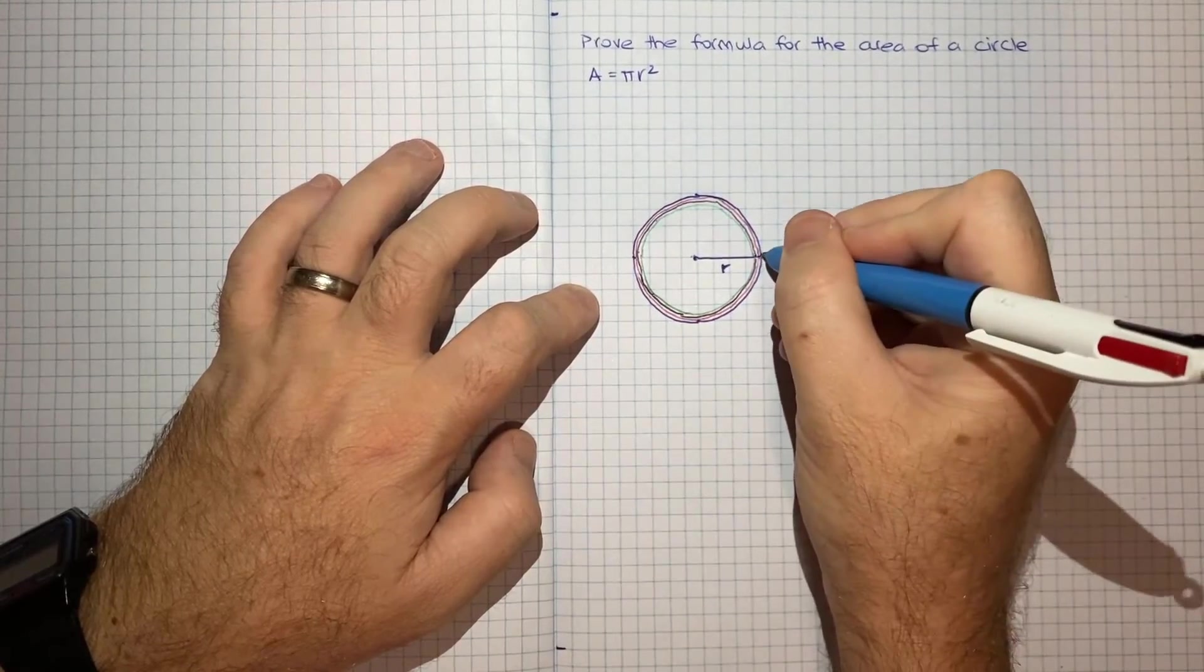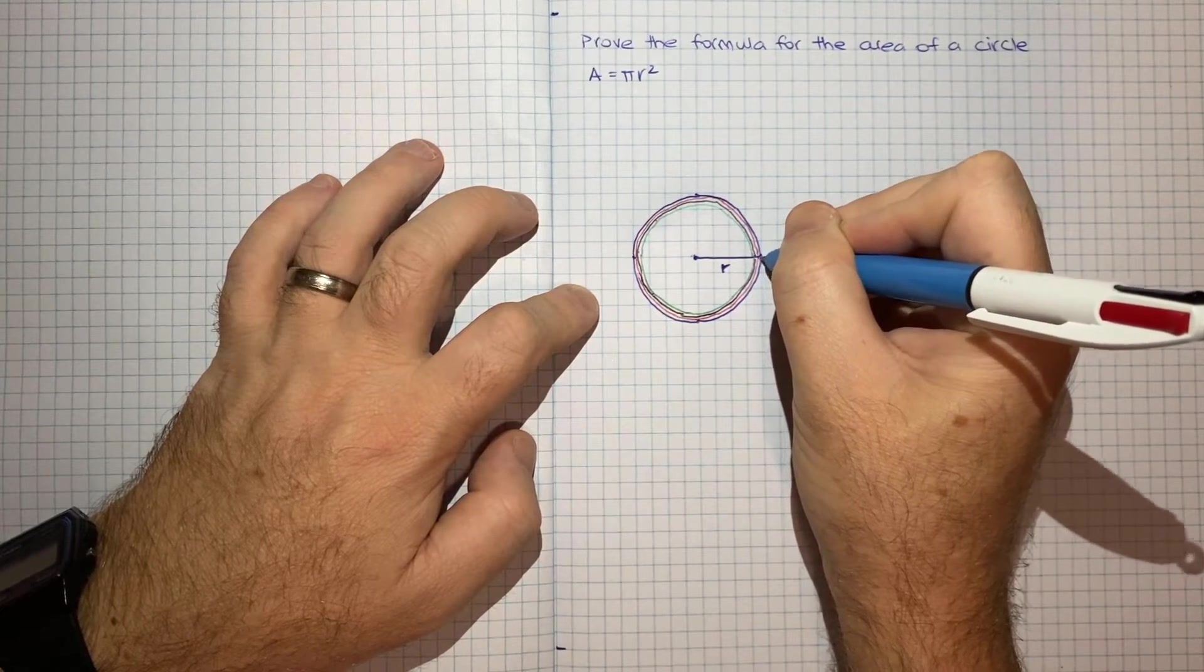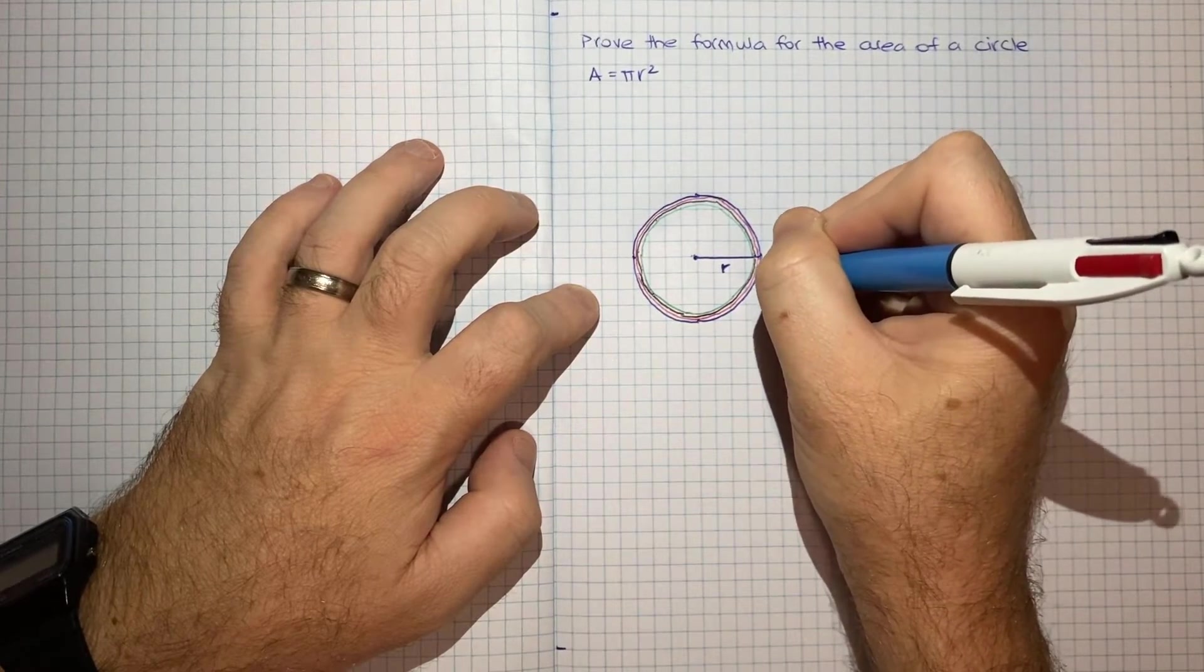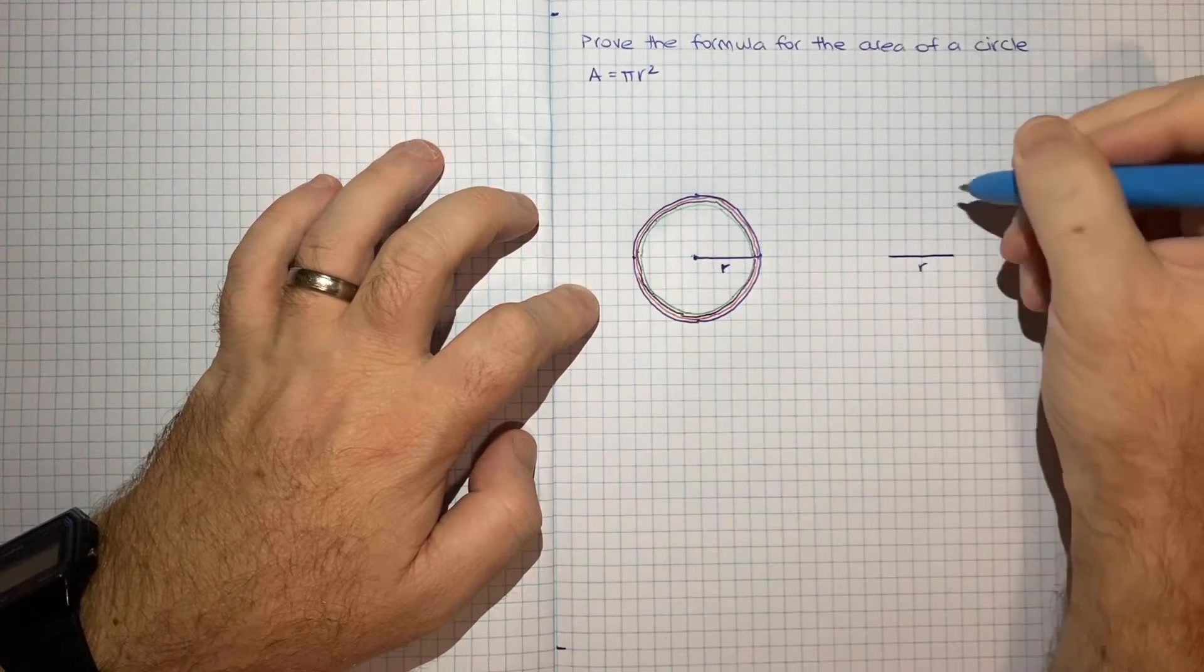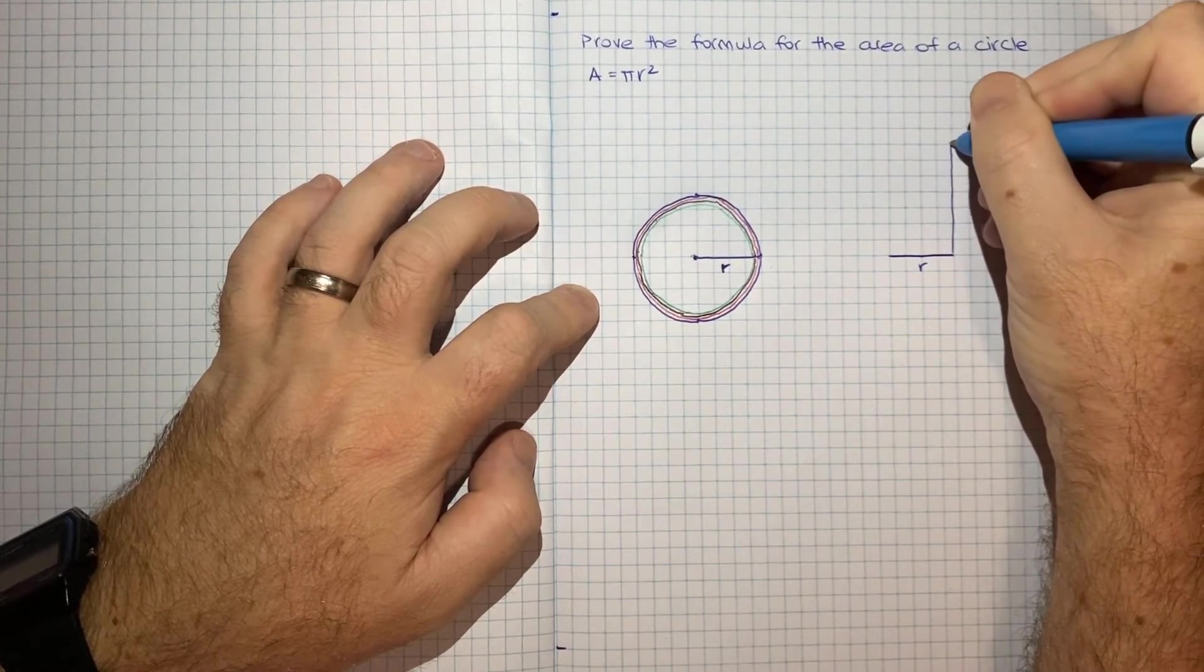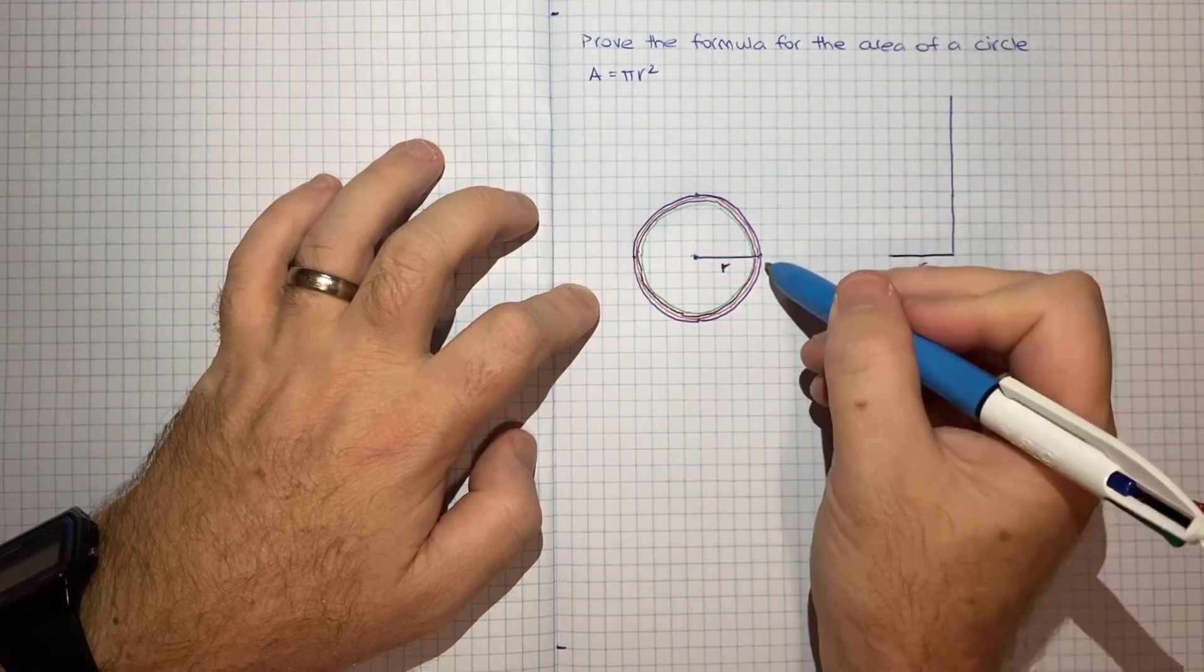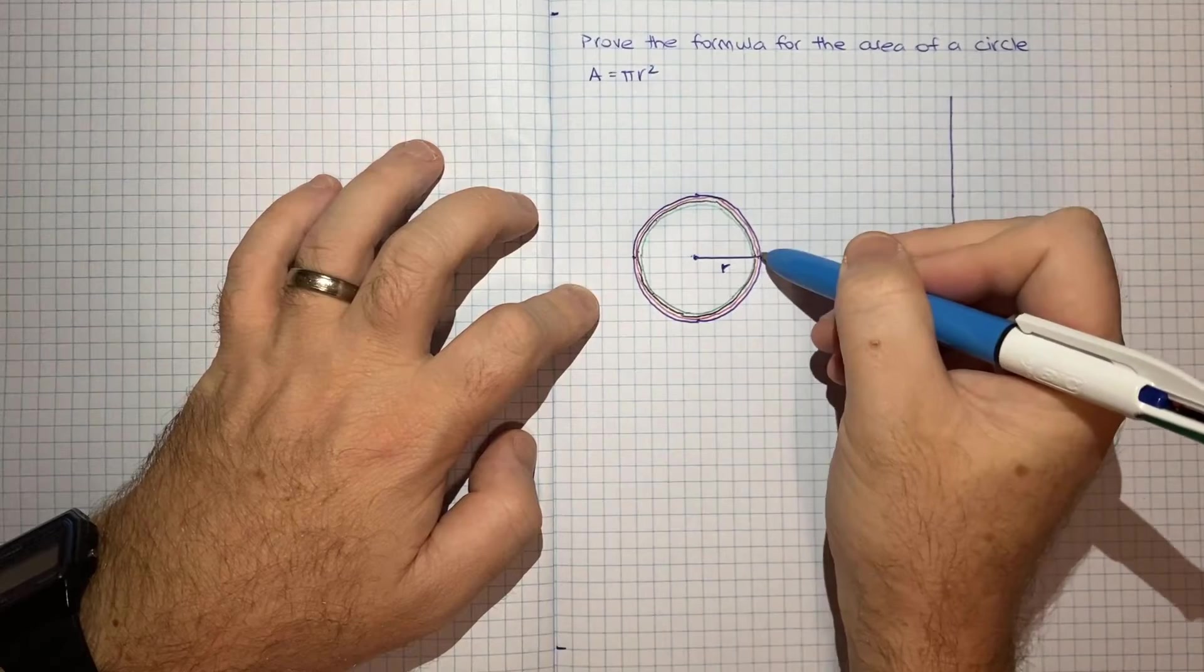If I think about the outside of the circle, if I was to make a cut here and then kind of uncoil the circle and make it a straight line, it would just be this straight line here. And the length of that line would be equal to the circumference of this outside circle.